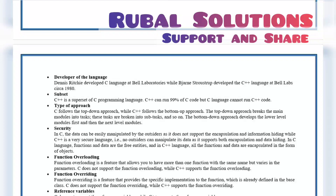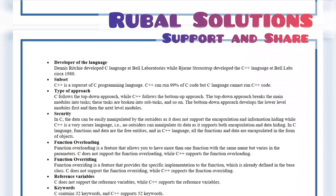Function overloading is a feature that allows you to have more than one function with the same name but varying parameters. C does not support function overloading while C++ supports function overloading. Function overriding is a feature that provides a specific implementation to a function which is already defined in the base class. C does not support function overriding while C++ supports function overriding.